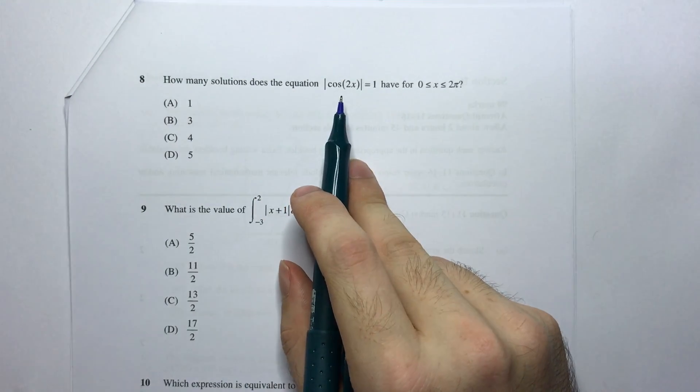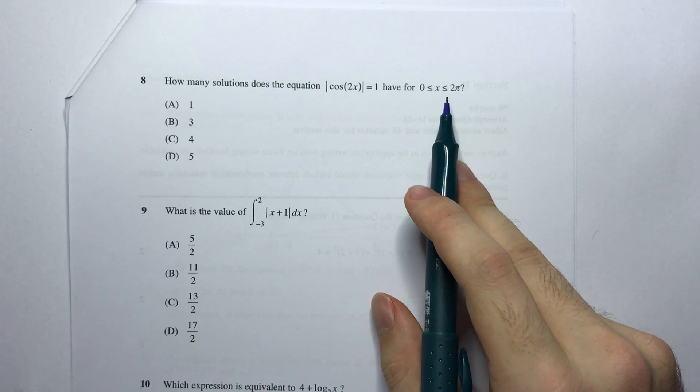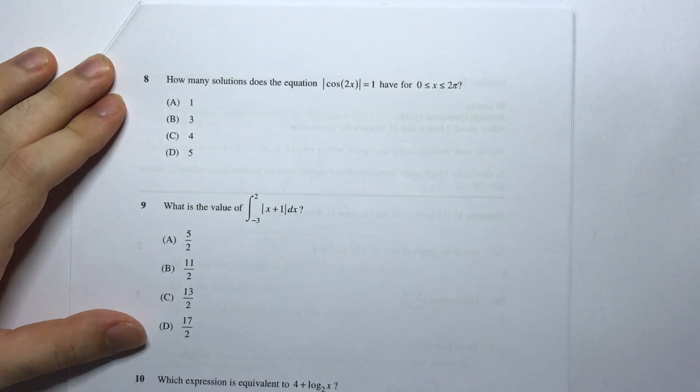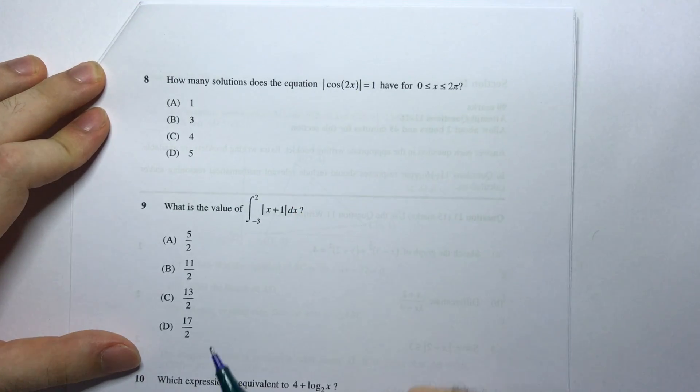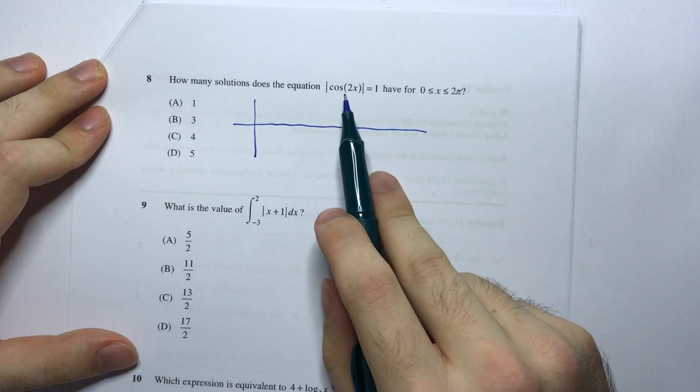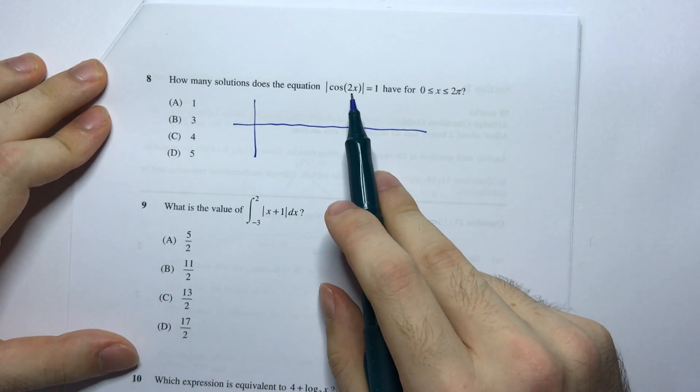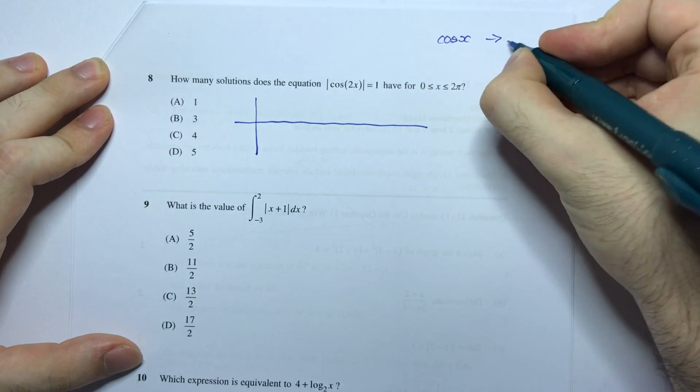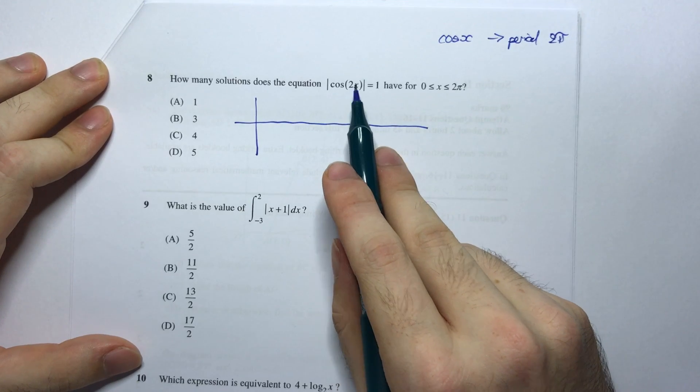Question 8: How many solutions does the equation, the absolute value of cos 2x equal to 1, have for x between 0 and 2 pi? So this one's going to involve a bit of thinking. There are a few ways to do it, but I think that the best way to do it would be by drawing a graph. So I want to draw the graph of cos 2x and the absolute value of that. So first let me draw cos 2x. Now as I was saying before with the tan function, this number here tells me how many times I fit one period or one oscillation within the original period. So the original period of cos x, that has a period of 2 pi.